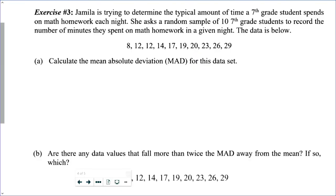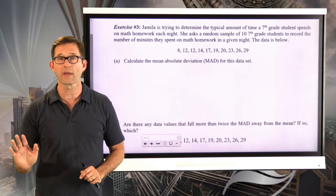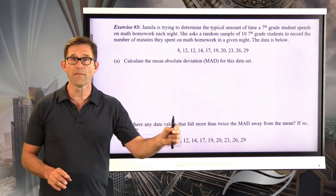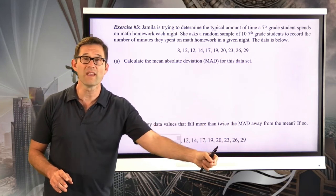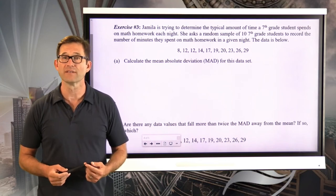Jamila is trying to determine the typical amount of time that a seventh grade student spends on math homework each night. She asks a random sample of 10 seventh grade students to record the number of minutes they spent on math homework in a given night. The data is shown below. Letter A: calculate the mean absolute deviation for this data set. First calculate the mean, then find the distances all data values are away from the mean, and then find the mean of all those distances — and then you'll have your MAD.